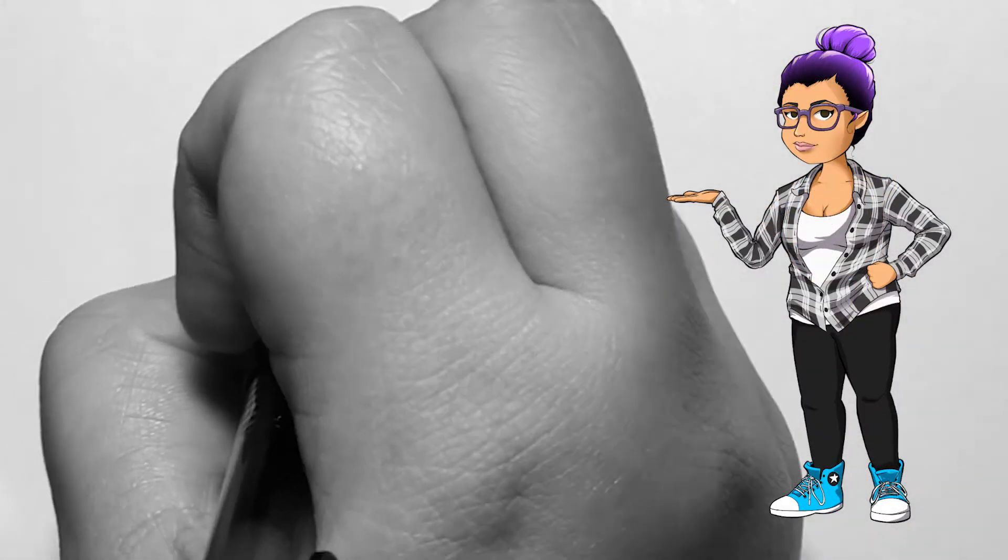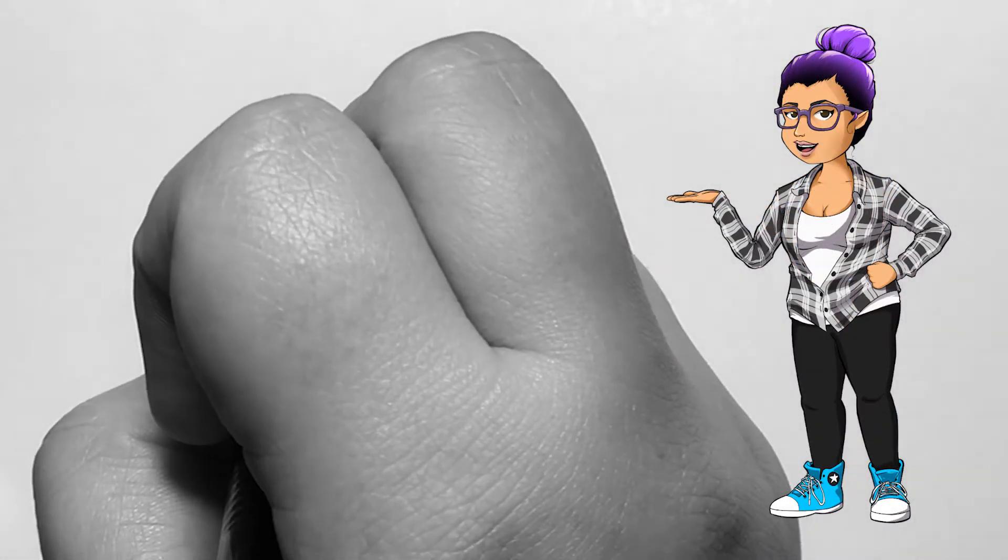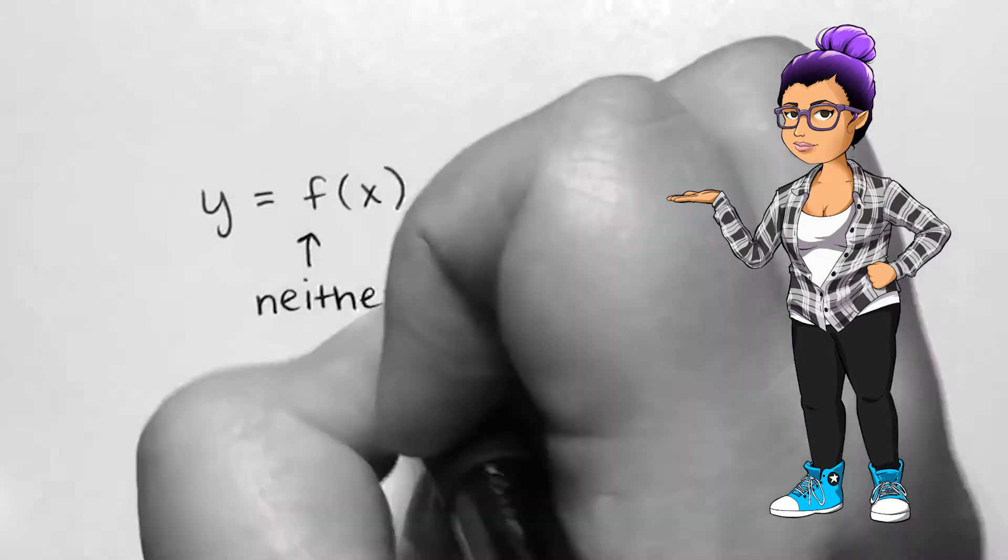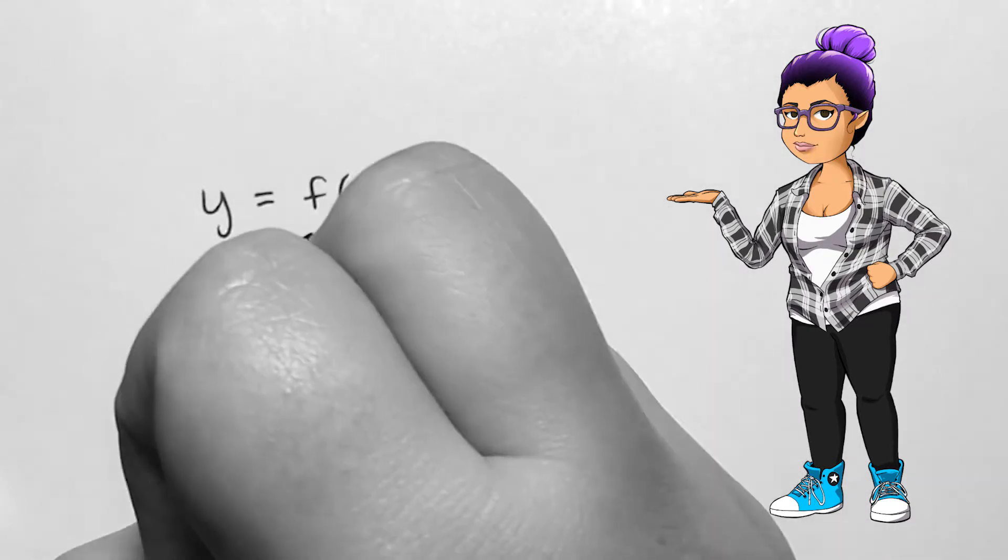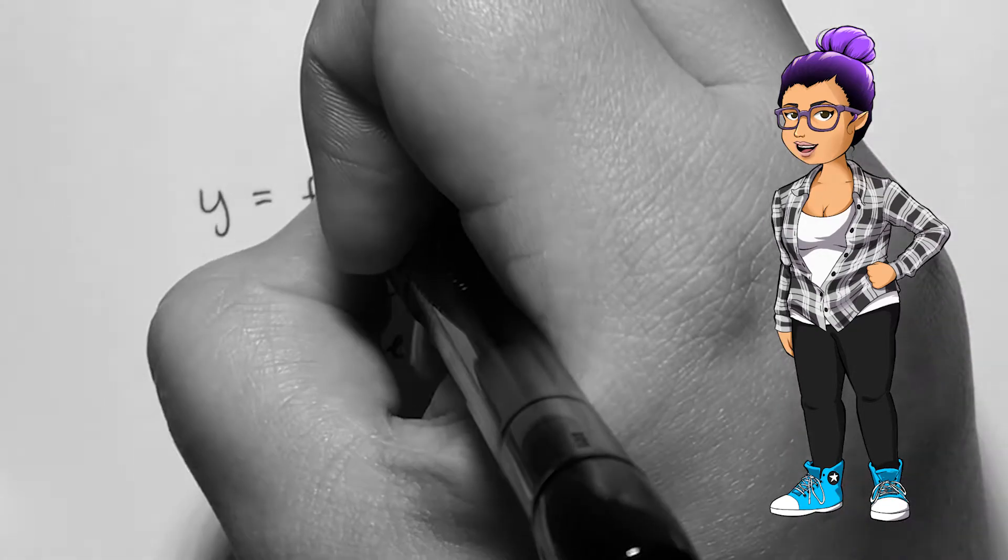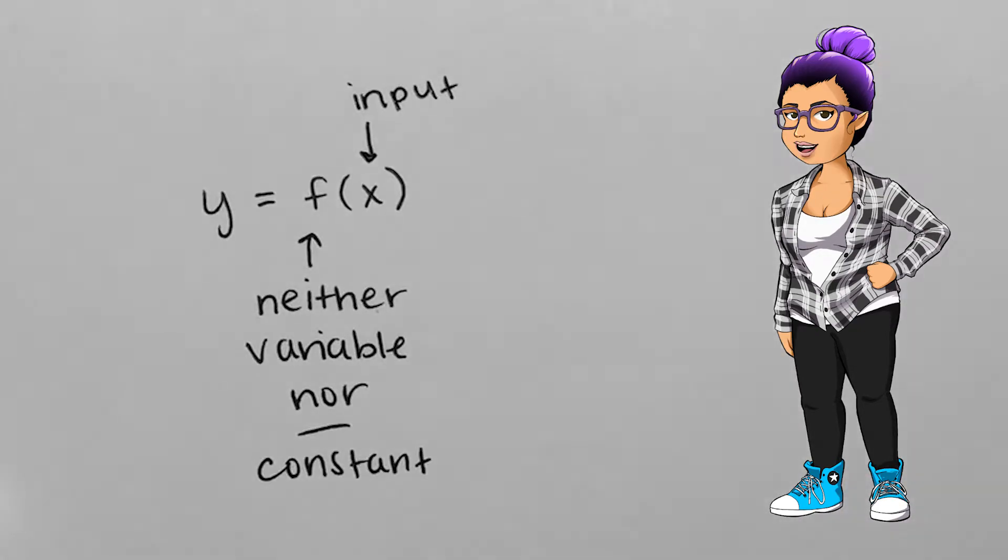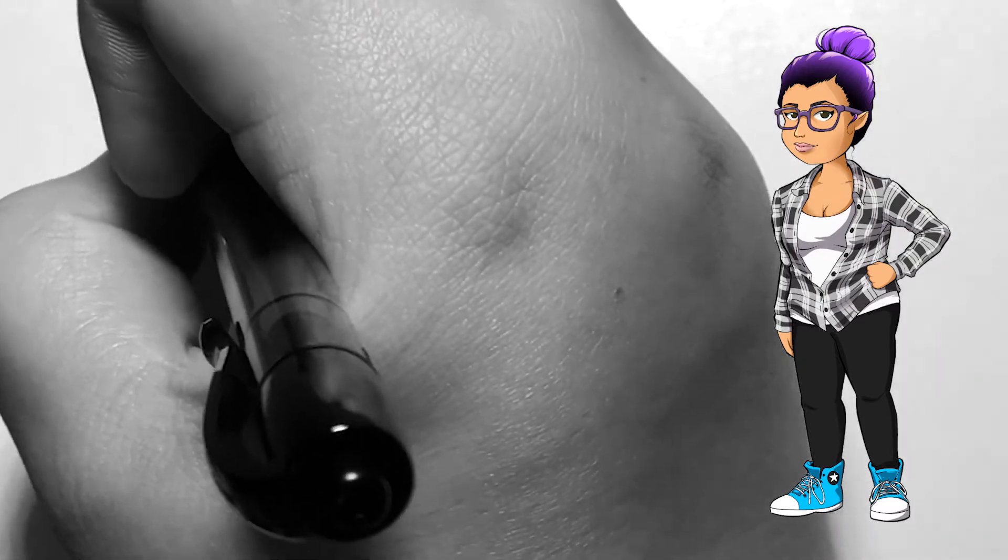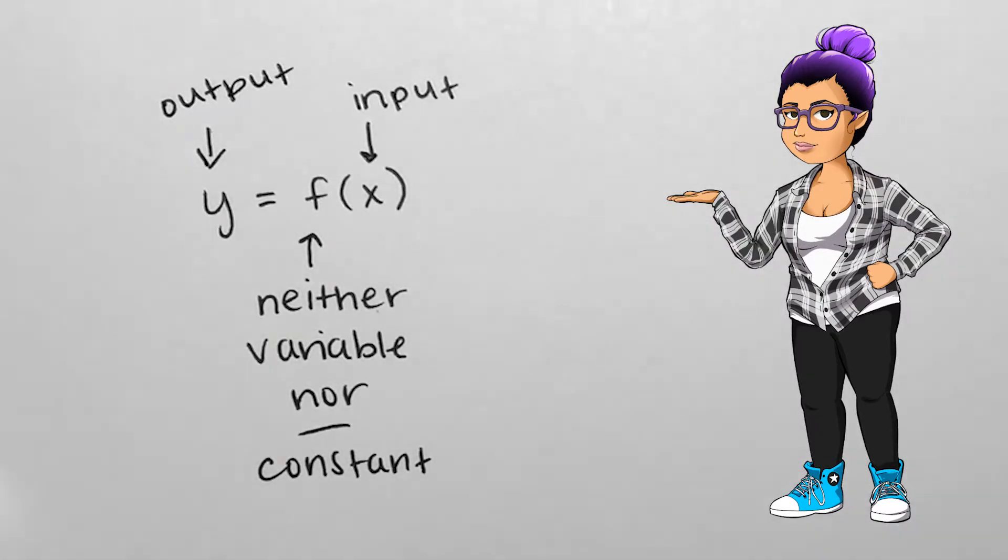In y equals f of x, f is the name of our function. This brings a new use for letters and symbols which is distinct from constants or variables. f does not hold meaning without its input or independent variable x. Our output or dependent variable is y or f of x.